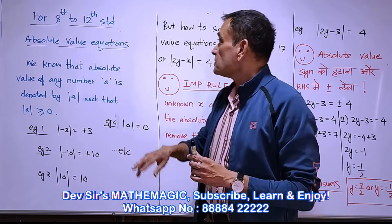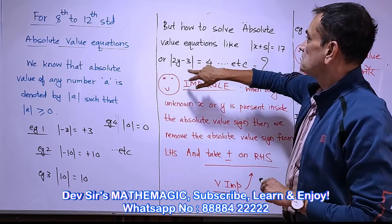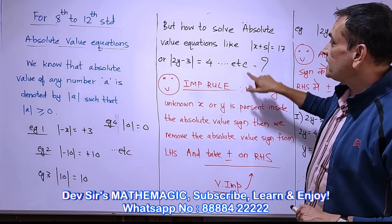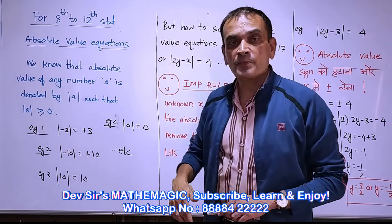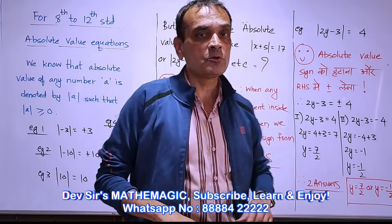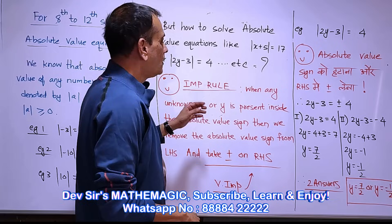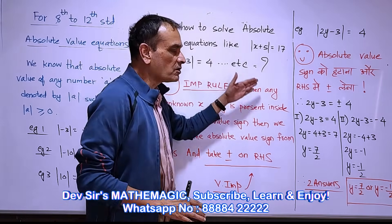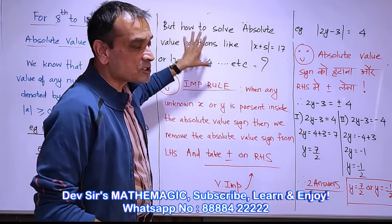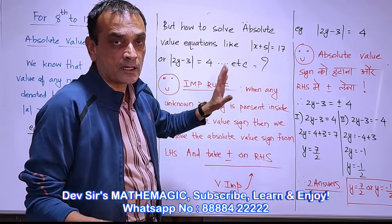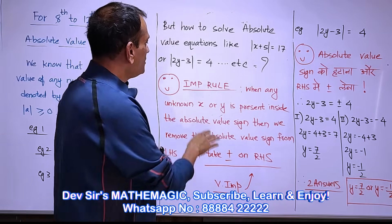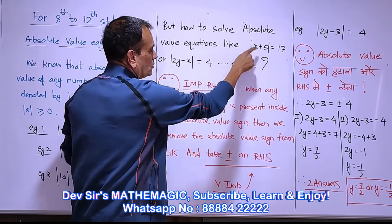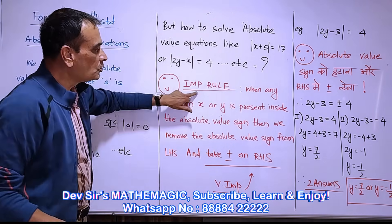Now, in 11th and 12th, there are equations called absolute value equations — like absolute value of x plus y equals 16, or absolute value of 2y minus 3 equals 4. When there is an unknown inside, we need to apply an important rule.